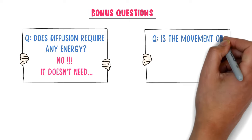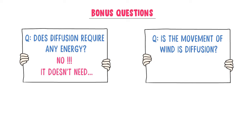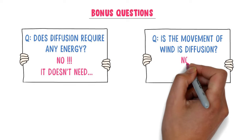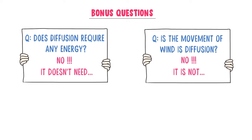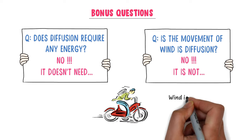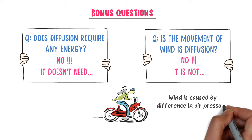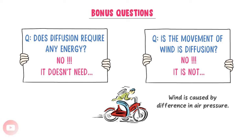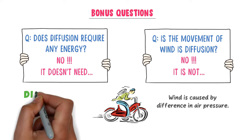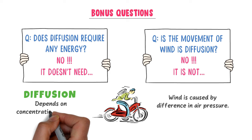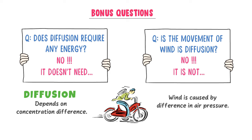Secondly, is the movement of wind a diffusion? The answer is no. Moving air is caused by differences in air pressure, not concentration differences. The movement of wind is not a diffusion process. Remember that diffusion purely depends on concentration differences between two regions.